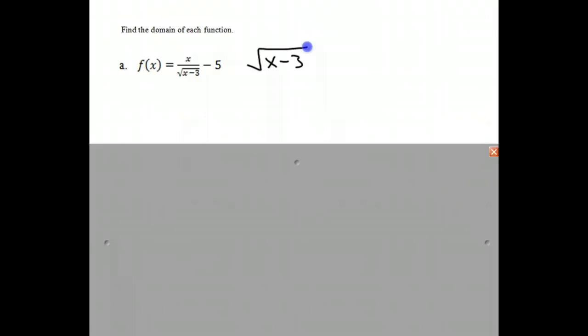In order to make this square root zero, we know that x would have to be three. Therefore, we must have an x value that is greater than or equal to three for us to have a positive number under the square root. So that's the first thing that we know.